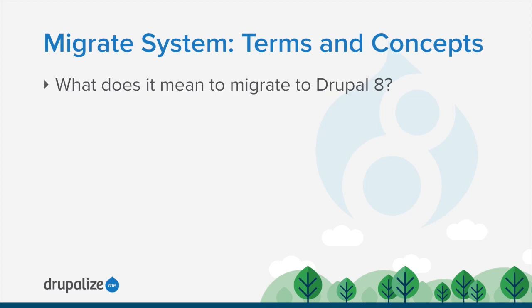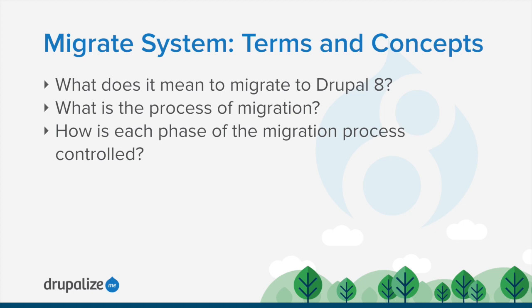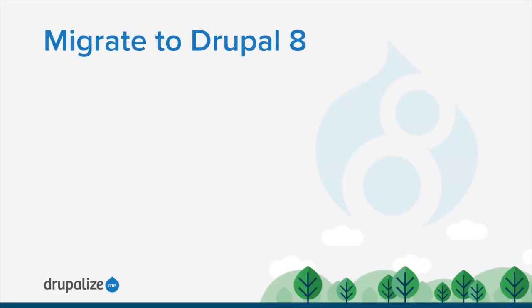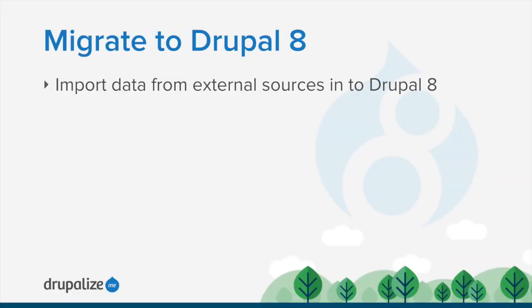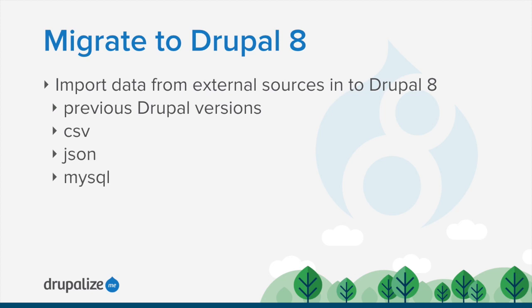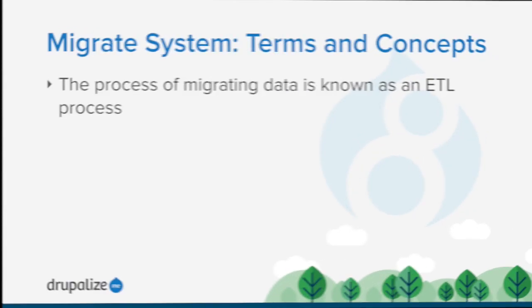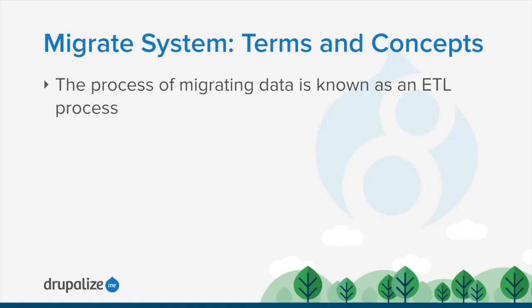What does it mean to migrate to Drupal 8 and what is the process of migration? Migrating to Drupal 8 is simply importing data from external sources into Drupal. This might be previous Drupal versions, CSV or JSON, another database, or some other data store.